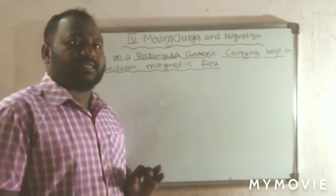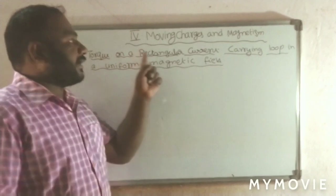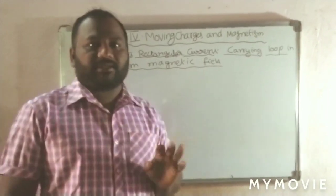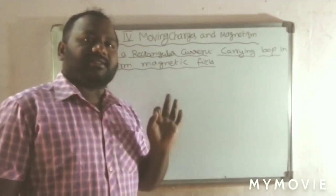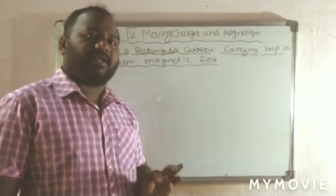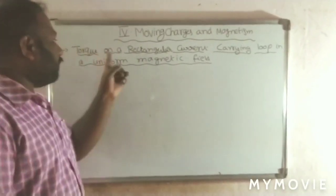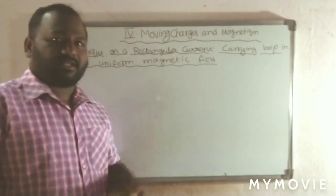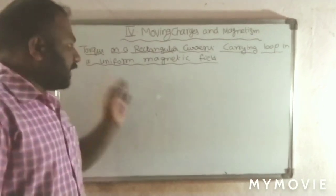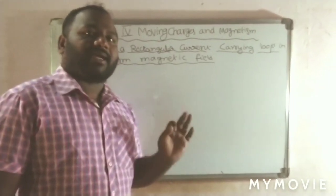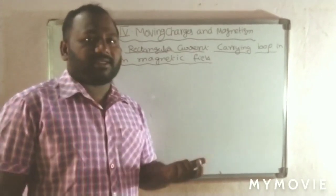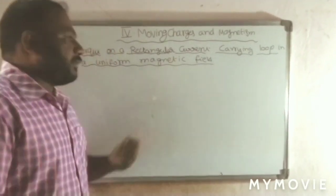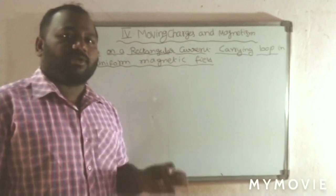Now, in today's session, we are going to derive what is the torque acting on a rectangular current-carrying loop which is placed in a uniform magnetic field. If you take a single conductor placed in a magnetic field, it experiences a force. But whenever we place a coil, it will experience a torque. We are also going to understand what is the magnetic dipole moment. In the previous electrostatics, you already know what is the electric dipole moment. Here, through this, we are going to understand what is the magnetic dipole moment.